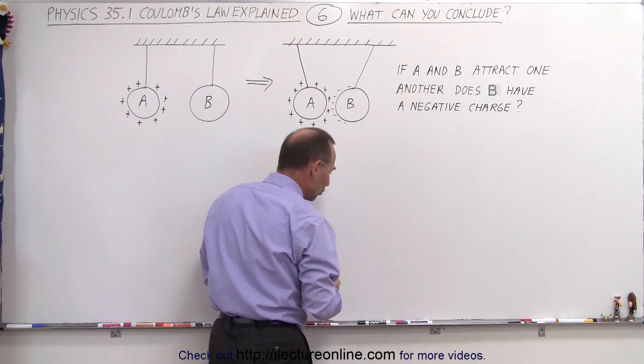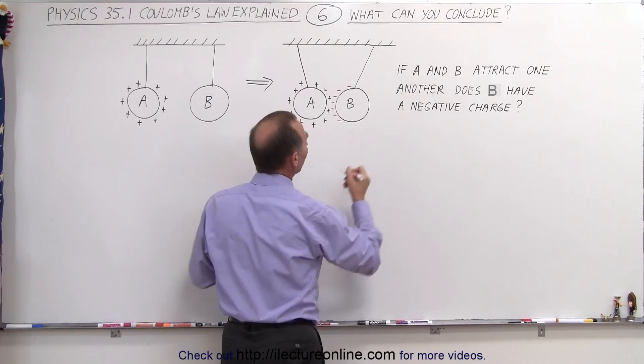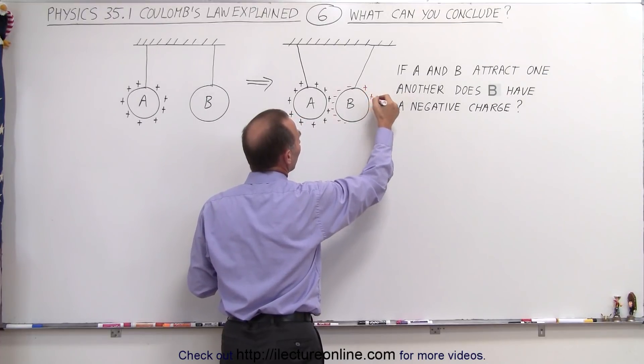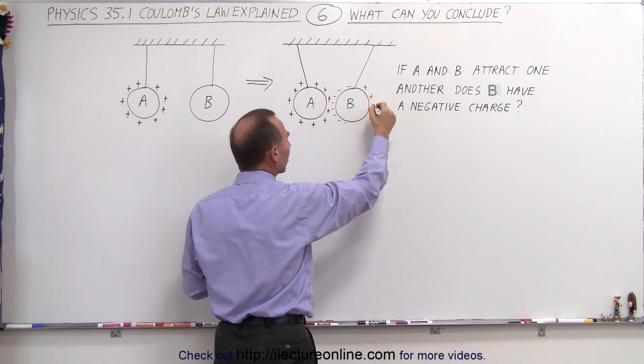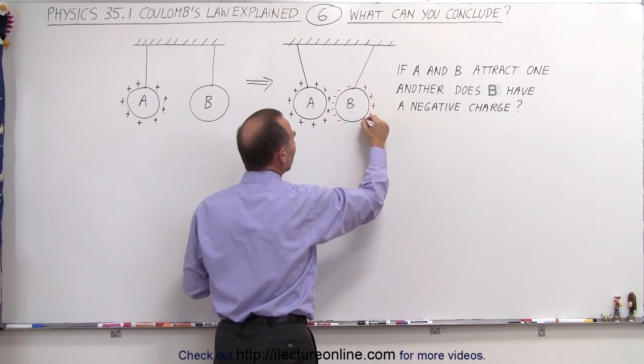Because of that, you'll have an excess of positive charges on the other side of the sphere, since some of the negative charges migrated to the left side, and so in a way,